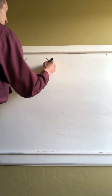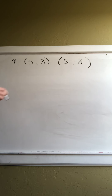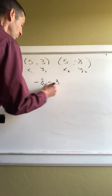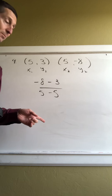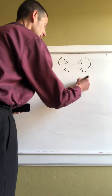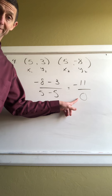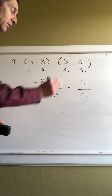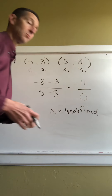What if the zero is on the bottom? Take the ordered pairs (5, 3) and (5, -8). Label X1, Y1, X2, Y2. Y's on top: negative 8 minus 3 is negative 11. X's on bottom: 5 minus 5 is zero. You cannot divide by zero — zero on the bottom means your slope is undefined. Not allowed, so the slope is undefined.